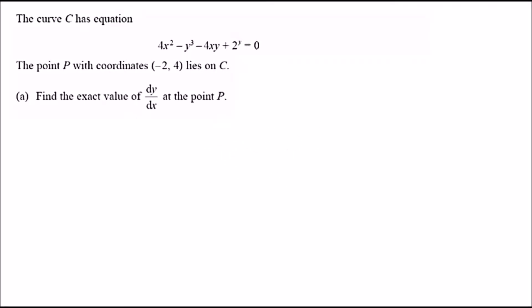Hey guys, welcome back to another video. Here we're given a curve C with the equation 4x² - y³ - 4xy + 2^y = 0. It's also known that point P has coordinates (-2, 4) and lies on this curve. Part A wants us to find the exact value of dy/dx at point P. In other words, differentiate and plug the P values in.